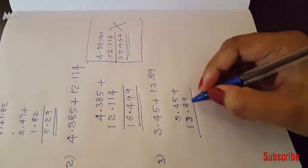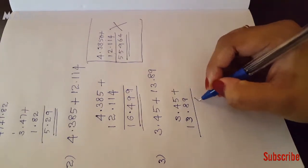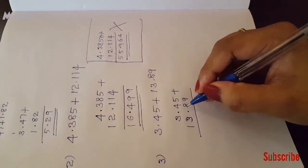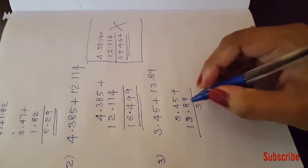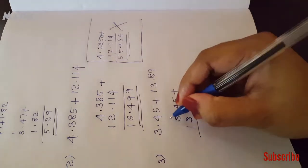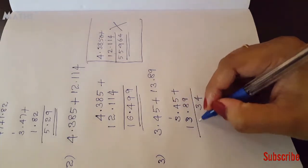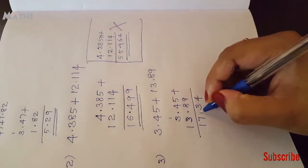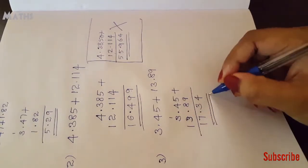Then, this is 13. Here: 5, 9, 3, 14. 14 is 4. 1, 1, 8, 9. 9, 4, 13. Here: 1, 1, 3, 4, 4, 3, 7. It is 1 point. The point is 1. This is 17 point.